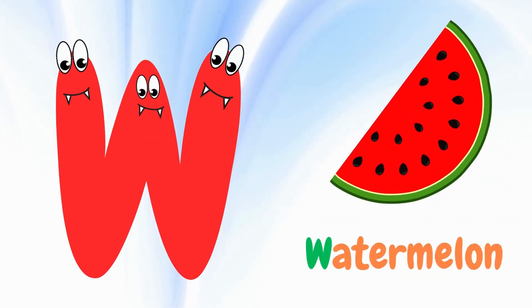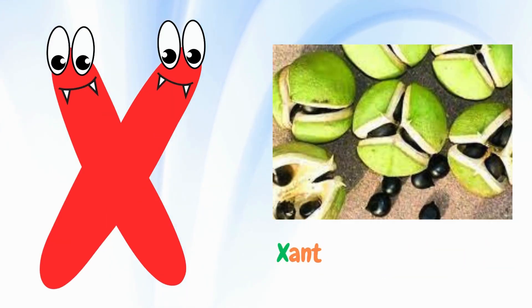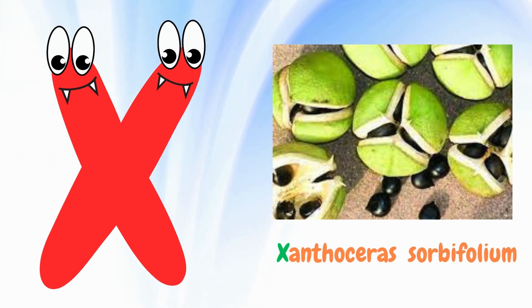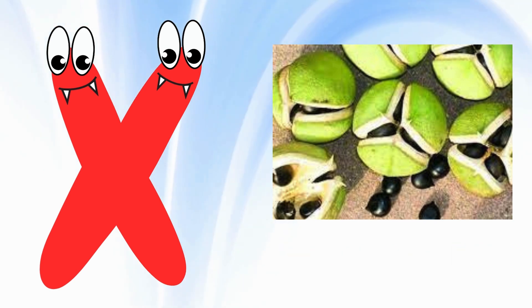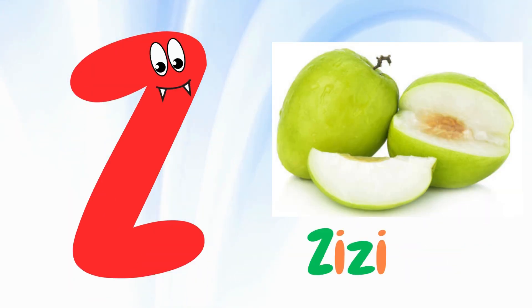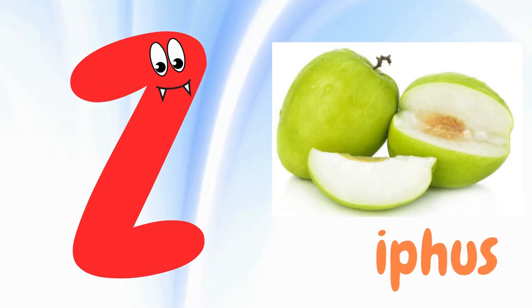V for vuanga, W for watermelon, X for xentosaurus, Y for yuzu, Z for zisyphus.